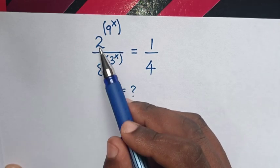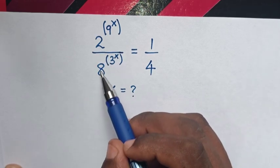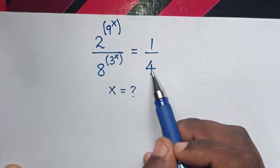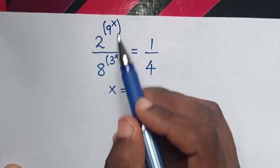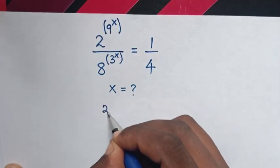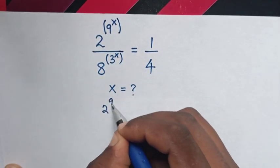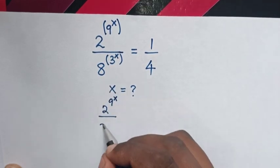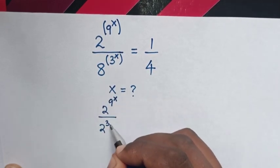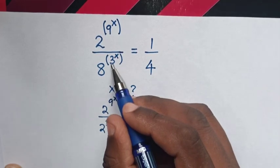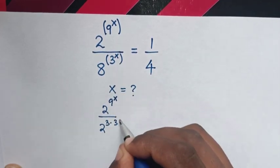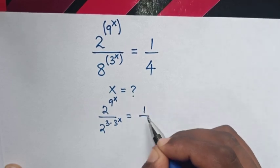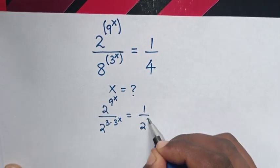So first, the base of 2 and the base of 8 — 8 is the same as 2 to the power of 3, and this 4 is the same as 2 to the power of 2. So it will be 2^(9^x) over 2^3 times 3^x, is equal to 1 over 2^2.